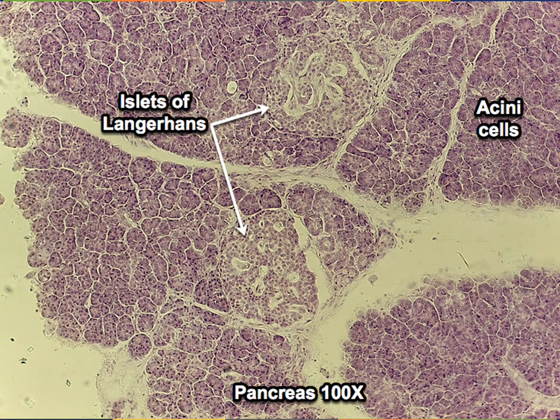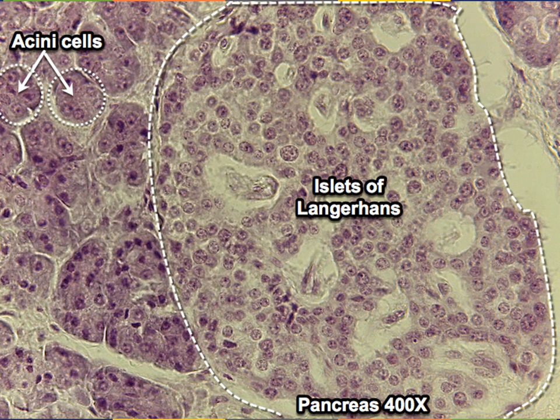This slide shows the histology of the pancreas with a lighter stain, where the darker staining cells are the acini cells, and the lighter staining circular regions are the islets of Langerhans, where the endocrine cells are found. A higher magnification view focused on an islet of Langerhans shows blood vessels giving a lighter staining to this region, and the endocrine cells — the alpha cells, which produce glucagon, and the beta cells, which produce insulin.